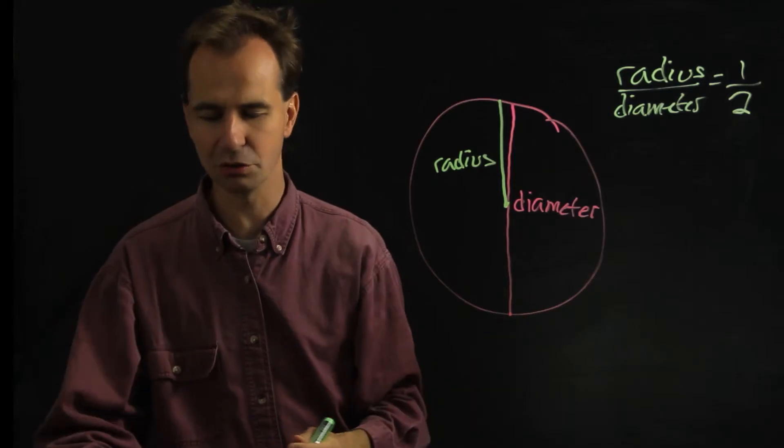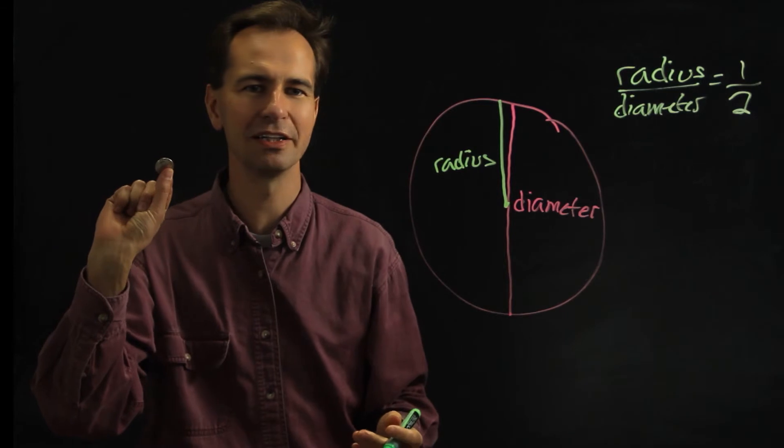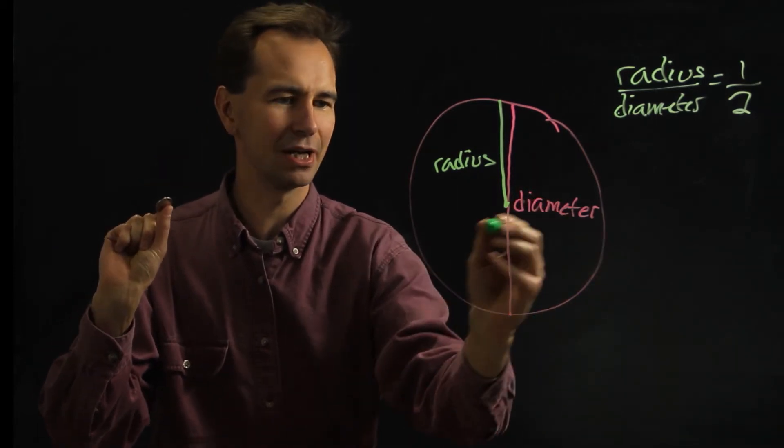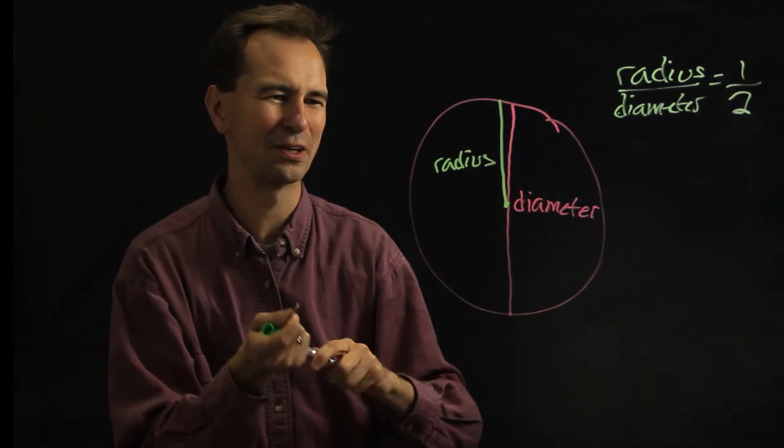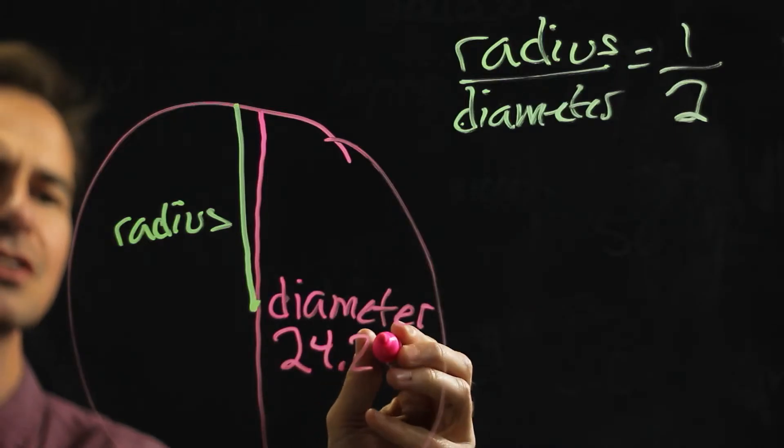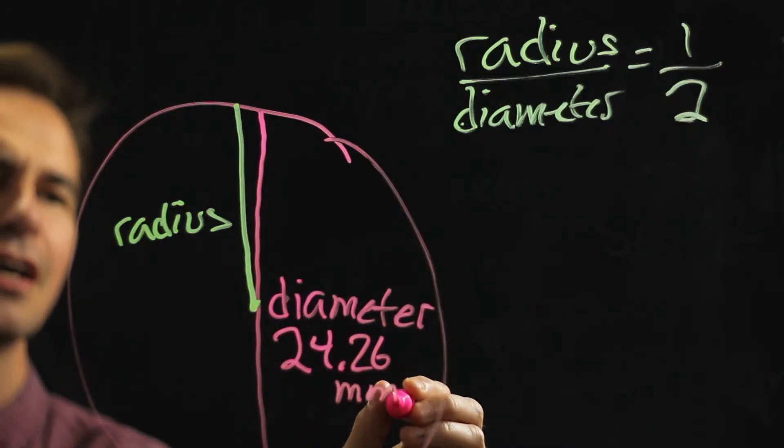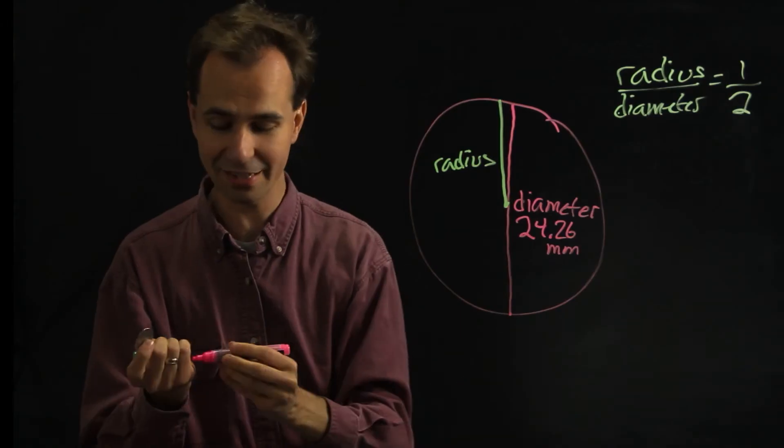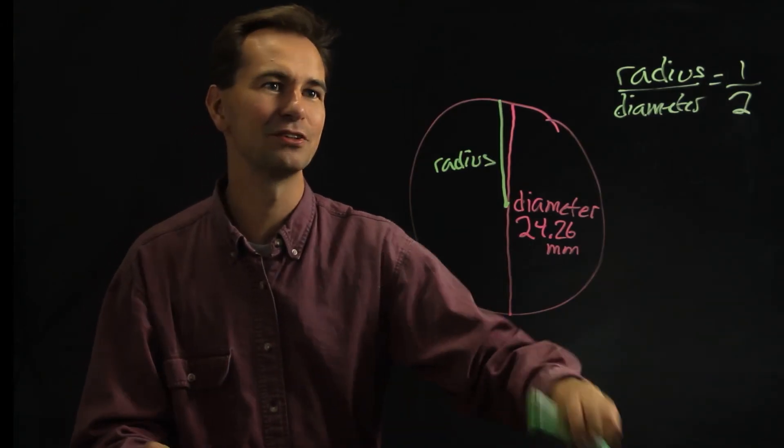That works for every circle. For example, a quarter. The diameter is 24.26 millimeters, and so the radius would be exactly half of that, which turns out to be